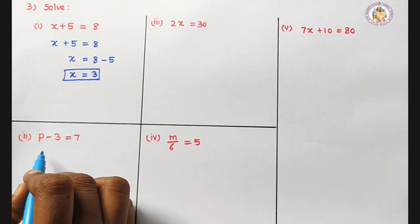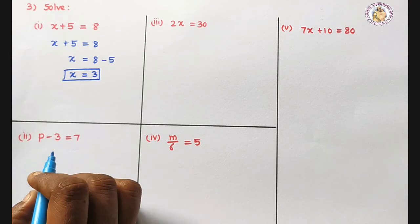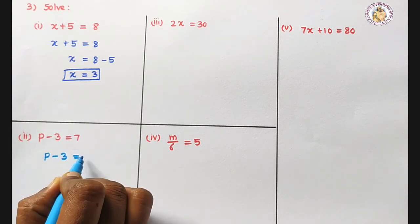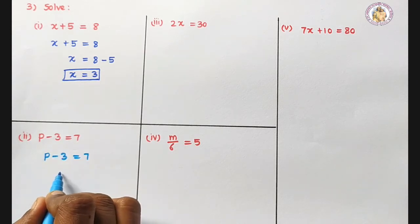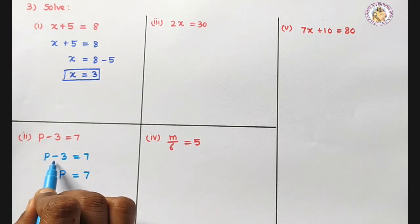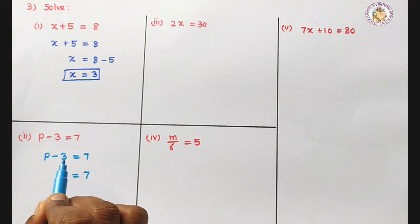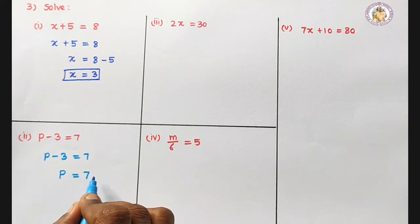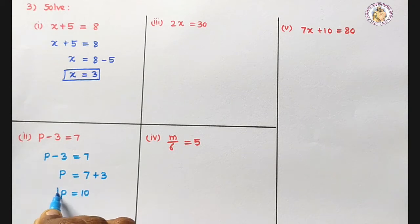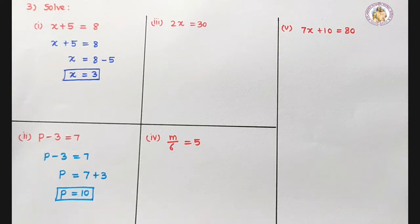Second: P minus 3 equals 7. We want to find out the value of P. Bring minus 3 to the other side — it becomes plus 3. So P equals 7 plus 3, which is 10. The value of P equals 10.